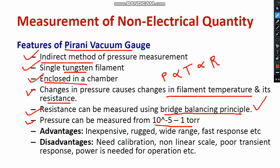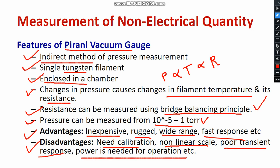Regarding the pros of the Pirani type gauge: it is quite inexpensive, has rugged construction, provides a wide range of pressure measurement, and has quick response. The major setbacks include: calibration is required, which is costly and not convenient; it has a non-linear scale where input and output are not directly proportional; poor transient response; external power supply is required for operation; and measurement is not direct.